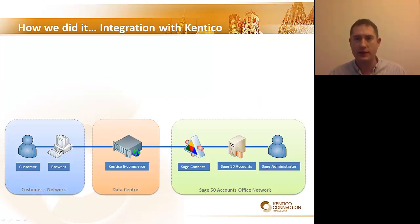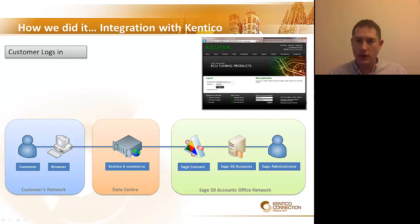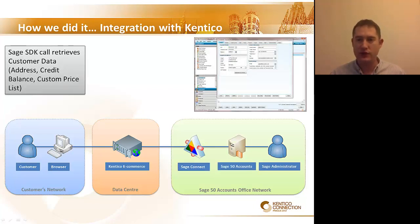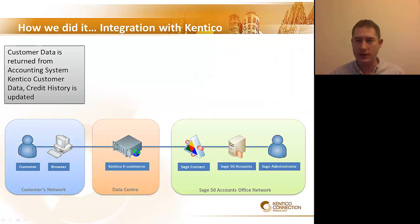To take one example in detail: what happens when a customer logs in? Firstly, an existing customer logs into the Kentico site — this screen is from a solution we developed for a company called DekuTech, who developed tuning software for cars. Then the Kentico custom event handler overrides the on-authentication method to make a web service call to the Sage Connect service. Then the Sage SDK retrieves the customer data such as address, credit balance, and custom price list. Customer data is then returned from the accounting system, and the Kentico customer data, credit history, and custom prices are updated.